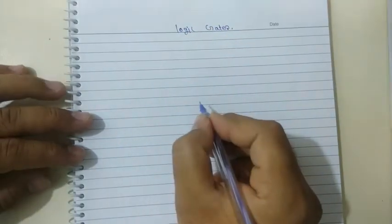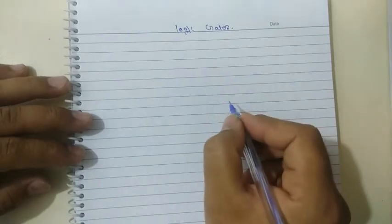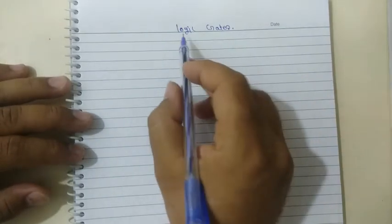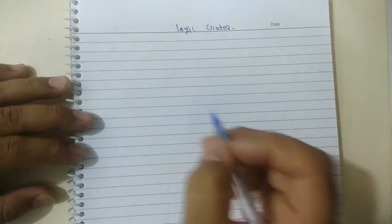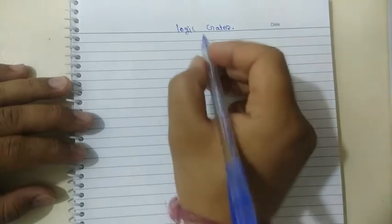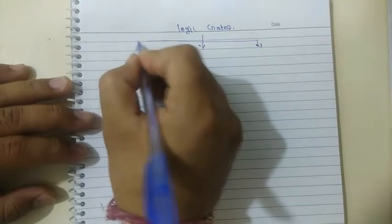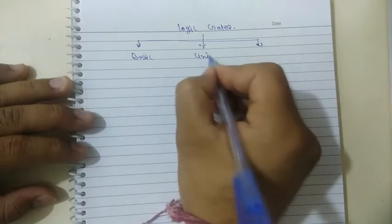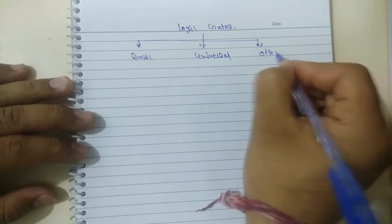We all know from Boolean algebra there are various operations of AND, OR, and NOT, and these operations are performed physically by the logic gates. So we can say that logic gates are the basic building blocks of any digital system. Logic gates can be classified into three categories: basic logic gates, universal logic gates, and other types of logic gates.